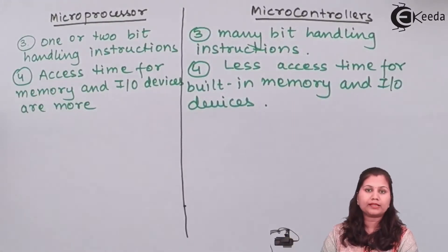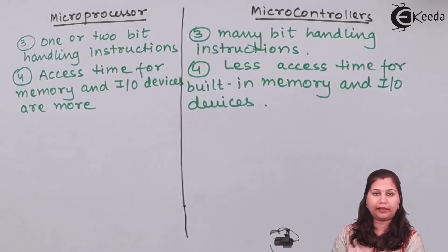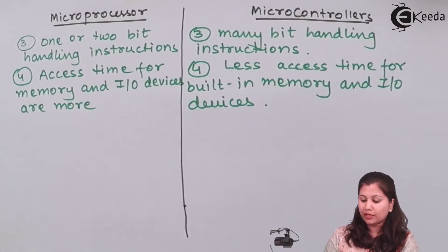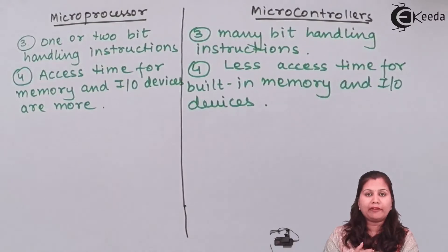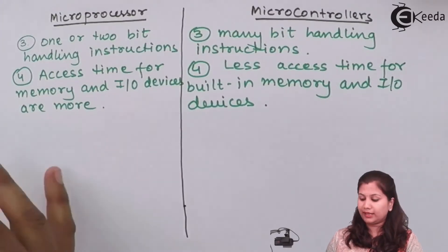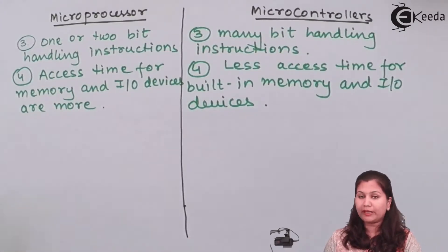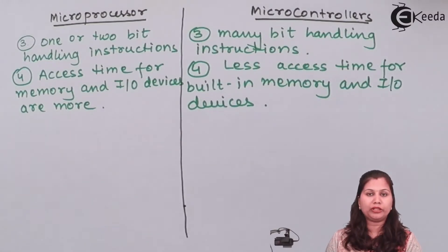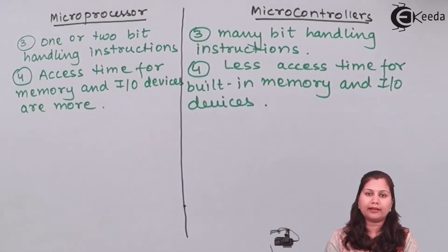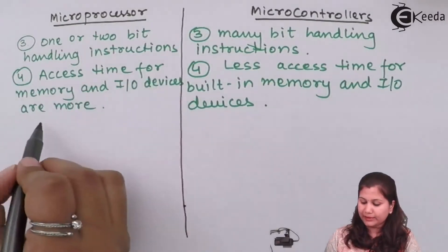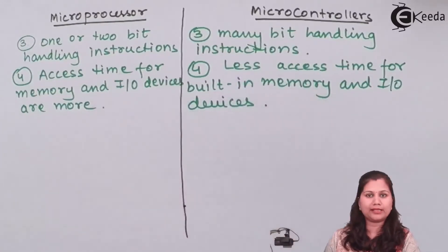Since in microprocessors the memory is external, the access time for memory and input/output devices is more. Whenever a microprocessor wants to communicate with memory and input/output devices, more time is taken compared to microcontrollers. In microcontrollers, the memory and input/output devices are embedded on the same chip, so less time is taken to access them. Therefore, access time is more in microprocessors and less in microcontrollers.